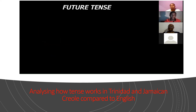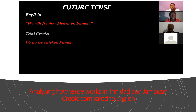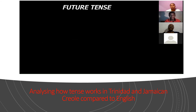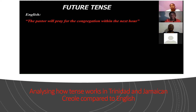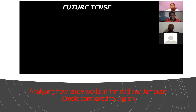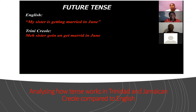Moving on to future tense. I am going to give you some sentences in the future tense and you will translate them in your language. The first sentence is: 'We will fry the chicken on Sunday.' In Trinidadian Creole: 'We go fry chicken Sunday.' The next sentence is: 'The pastor will pray for the congregation within the next hour.' Trinidadian: 'The pastor will pray for the congregation in our hour.' The final sentence for future tense is: 'My sister is getting married in June.' Trinidadian: 'My sister going and get married in June.' Jamaican: 'My sister are going to get married in June.'